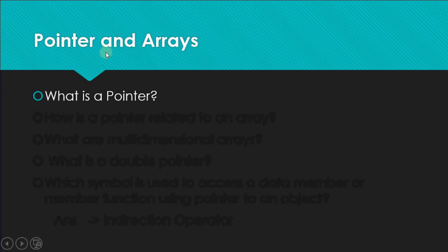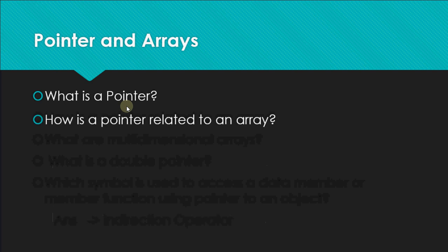The next important topic for viva is pointers and arrays. A pointer is a special variable used to store the address of another variable. To declare a pointer, we write the data type followed by a star and the pointer name. For example, int* p means p is a pointer which can store the address of an integer variable — the int doesn't mean p is an integer.